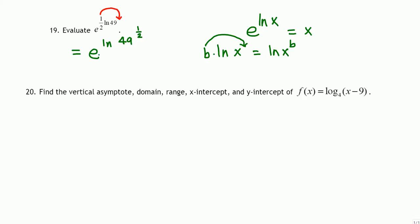Now the actions of the exponential and natural log cancel, and we are left with 49 raised to one-half. Raised to one-half means a square root, so this is the same as the square root of 49, which equals 7.